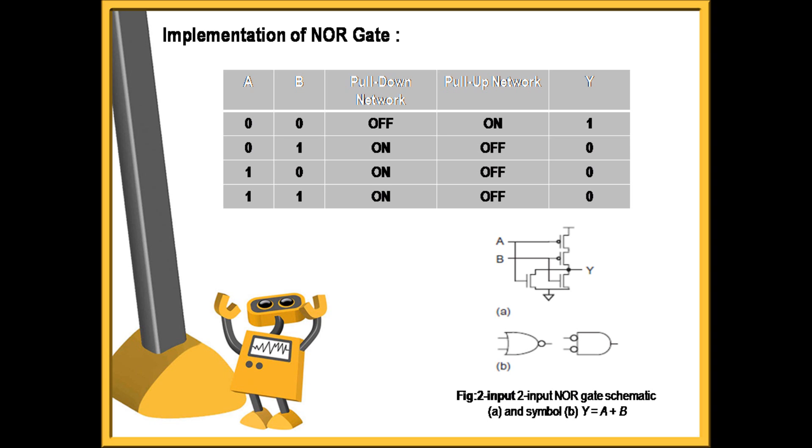For A and B, both the inputs equal to 1, the pull-down network will be on and the pull-up network will remain off. Therefore, Y equals 0. The main reason for implementing NOR gate to achieve Y equals A NOR B was for only logic high signals, the output will be 0, and for only logic low signal input, the output will be 1, and it is achieved.